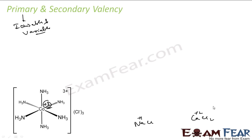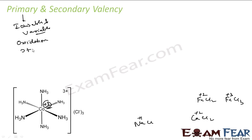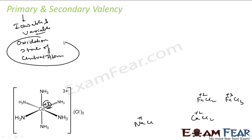For example, iron can have FeCl2 or FeCl3. In FeCl3, iron has the primary valency of 3, and in FeCl2, iron has the primary valency of 2. So variable and ionizable are the two important characteristics of primary valency — it is nothing but the oxidation state of the central atom.